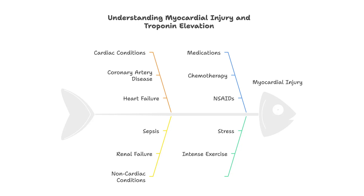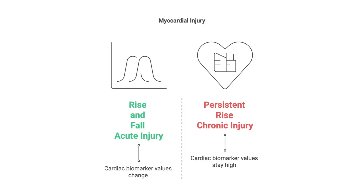Non-cardiac causes include sepsis, kidney disease, pneumonia, and chemotherapy. Cardiac causes include myocardial infarction and myocarditis. This injury can be chronic — a persistent rise in troponin — or acute, showing a rise and fall of the marker. This acute injury is the first crucial criterion for a diagnosis of MINOCA.